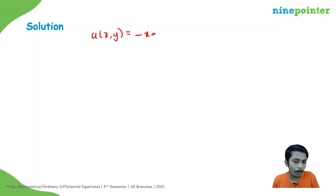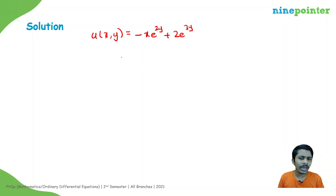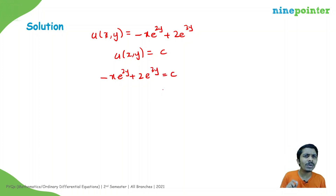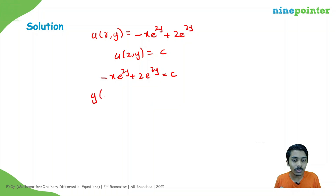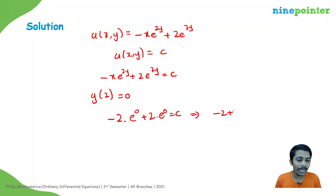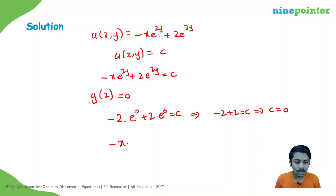So the potential function is u(x, y) = −x·e^(2y) + 2e^(3y). The general solution is −x·e^(2y) + 2e^(3y) = c. Applying the initial condition y(2) = 0: −2·e^0 + 2·e^0 = c, giving −2 + 2 = 0, so c = 0.